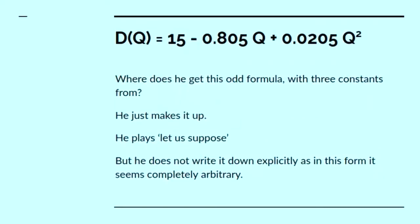Now let's look at this. It's a really odd formula. And it's got three constants, 15, 0.805, 0.205. And where does he get these constants from? Well, he just made them up. He says, let's suppose that this is the function. But he doesn't write it down explicitly as a polynomial, because once you write it down explicitly as a polynomial, it's clear that it's totally arbitrary, senseless equation. But behind the scenes, that's the equation he's got.